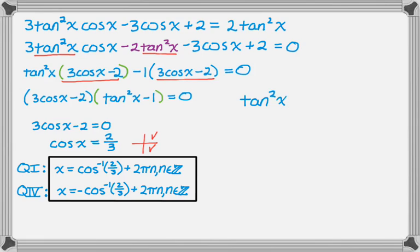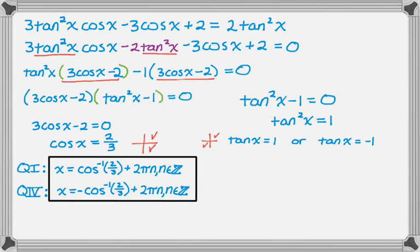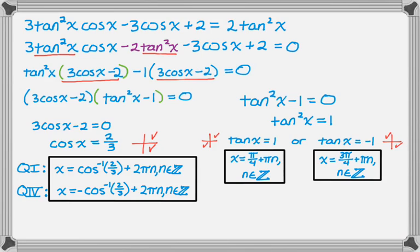Then tan squared of x minus 1 equals 0, so tan squared x equals 1, meaning tan x equals 1 or tan x equals negative 1. If tan x equals 1, we're in quadrants 1 or 3: x equals pi over 4 plus pi n. If tan x equals negative 1, we're in quadrants 2 or 4: x equals 3 pi over 4 plus pi n, where n is an element of the integers. Both check out. Since I didn't square anything here, I'm unlikely to have extraneous solutions — it's really when you square both sides. Also, if you foolishly divide both sides by a trig function you can lose solutions, so always bring everything to one side and factor instead.